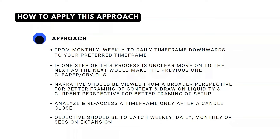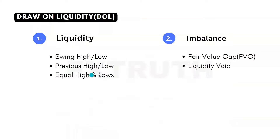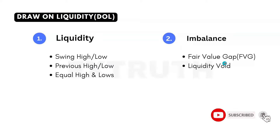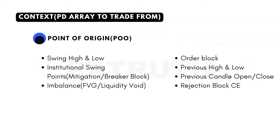The first part of the analysis focuses on drawn liquidity — specifically liquidity itself, which includes swing highs, swing lows, previous highs or lows, and equal highs and equal lows. The second focus is imbalance: fair value gaps or liquidity voids.